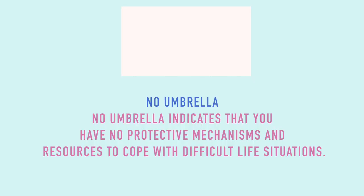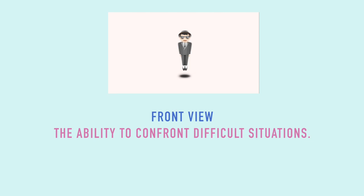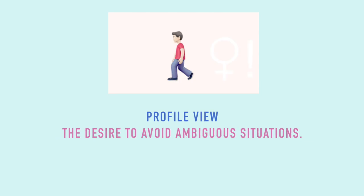For umbrellas: if you drew no umbrella, it indicates you have no protective mechanisms to cope with difficult life situations. A large umbrella that covers the person almost completely means you're very defensive — the type who always needs protection and prefers isolation. That's true for me — whenever I'm down or need my space, I need isolation.